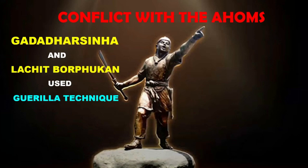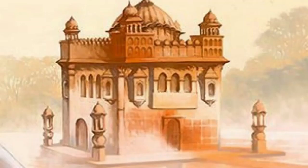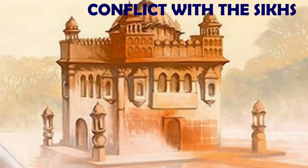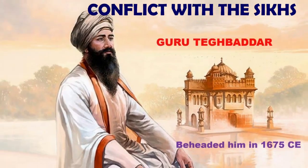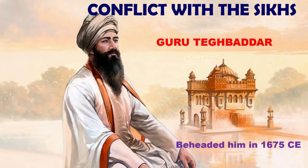The Ahoms used guerrilla techniques in the conflict against the Mughals. It became impossible for the Mughals to create a strong base in Assam. Conflict with the Sikhs: The ninth Guru of the Sikhs, Guru Teg Bahadur, protested strongly against Aurangzeb's policy of religious intolerance. Aurangzeb imprisoned him and beheaded him in 1675 CE.